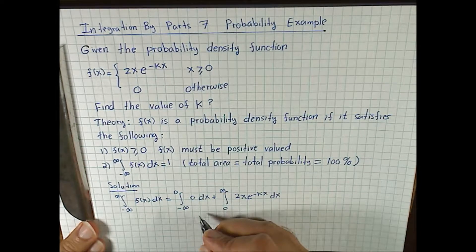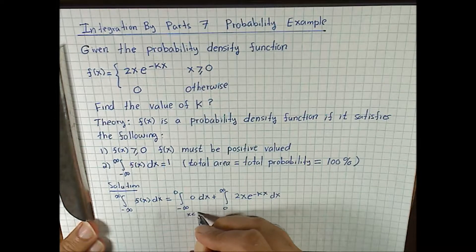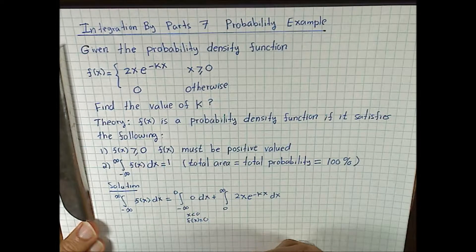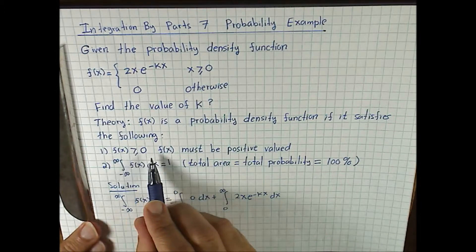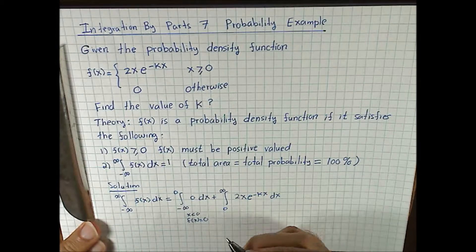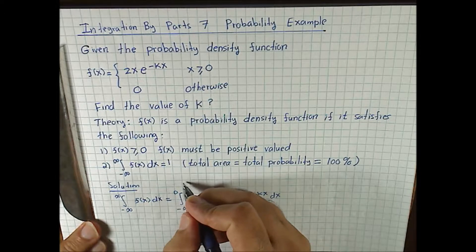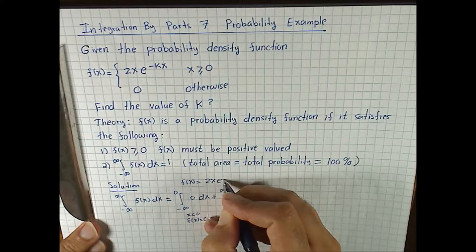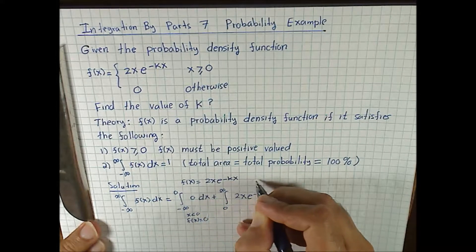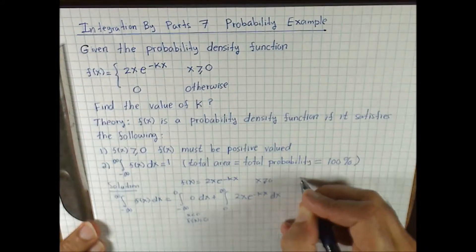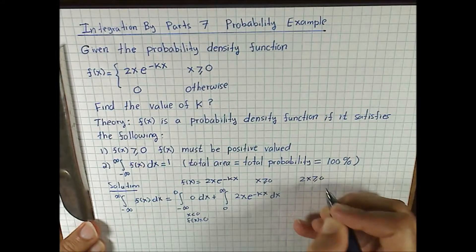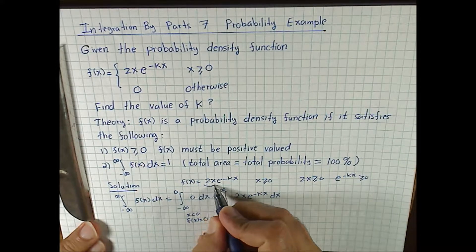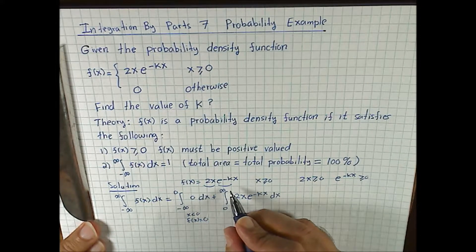Notice when x is less than 0, f of x equals 0. We should also verify the first axiom that the function is positive valued. The function f of x equals 2x e to the negative kx when x is greater than or equal to 0. Well, 2x is definitely larger than 0 — that's positive. Exponential functions are always positive, so we have a product of two positive things. Therefore the function is always positive.